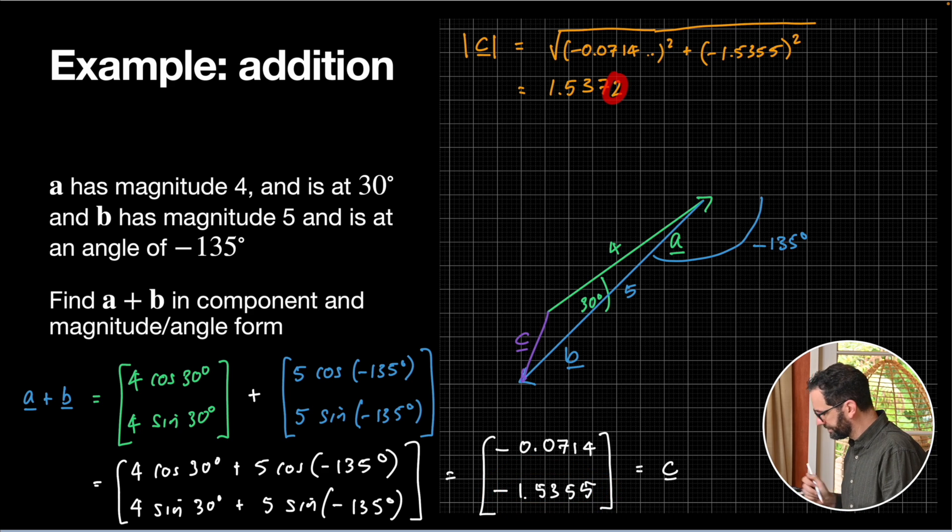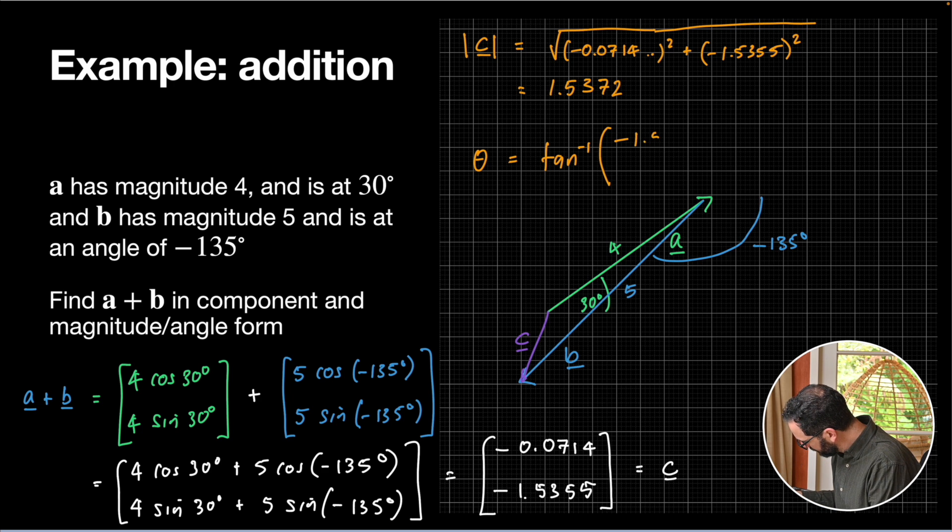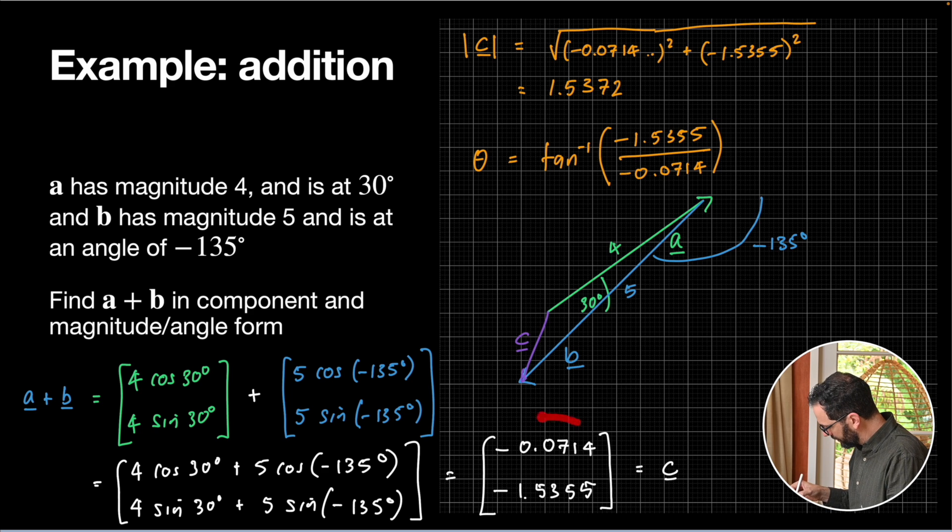What about the angle? Well, the angle is going to be the inverse tan of the y component divided by the x component. So those negative signs will cancel off. And I can see that my x component is negative. So this is going to give me the wrong answer. So that means I'm going to also subtract off 180 degrees. If you prefer to add 180 degrees, it's fine. It gives you an equivalent answer.